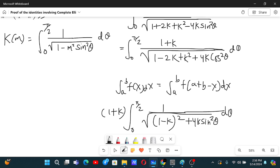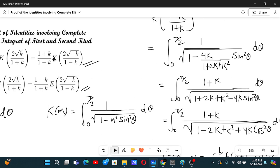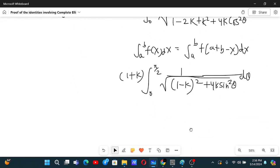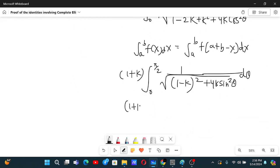Now let's try to take 1 minus k also common because we need 1 plus k by 1 minus k. If we take 1 minus k common, we have 1 plus k by 1 minus k integral from 0 to pi by 2 of 1 by root under 1, we have to make minus over here. So we have minus 4k by 1 minus k whole square and then sin square theta d theta.